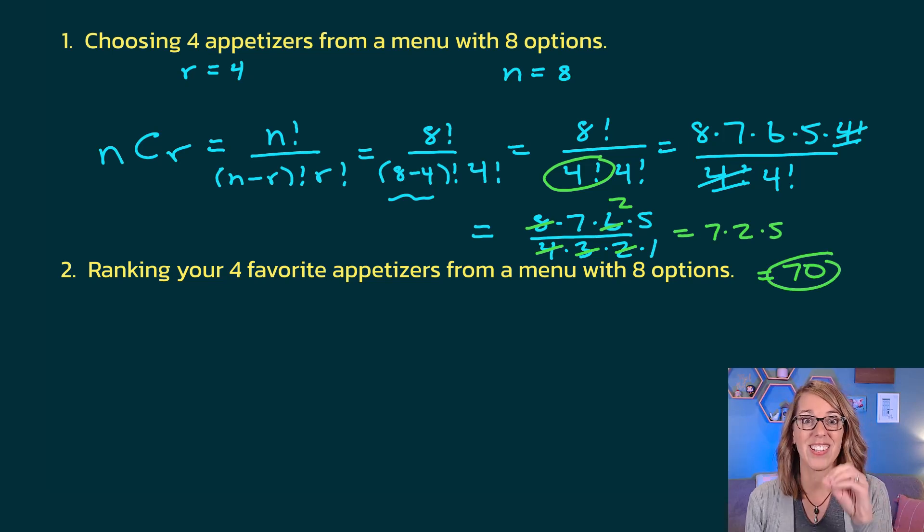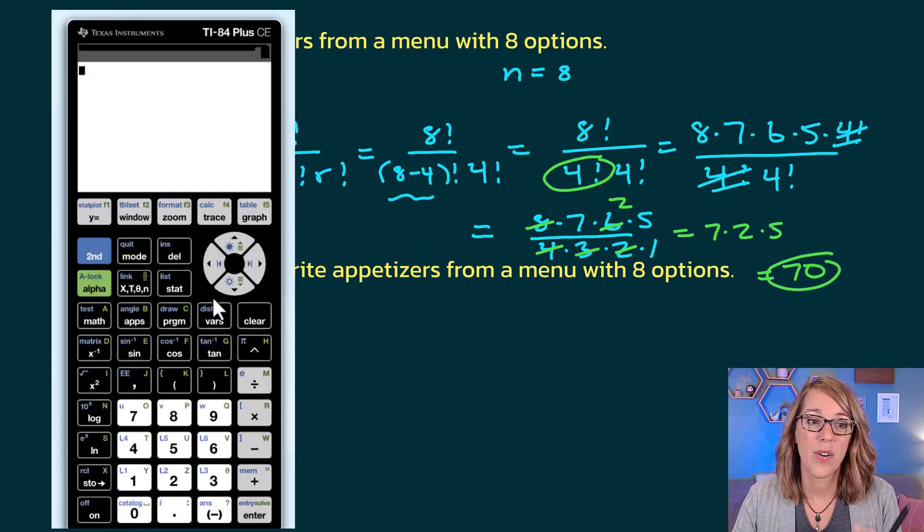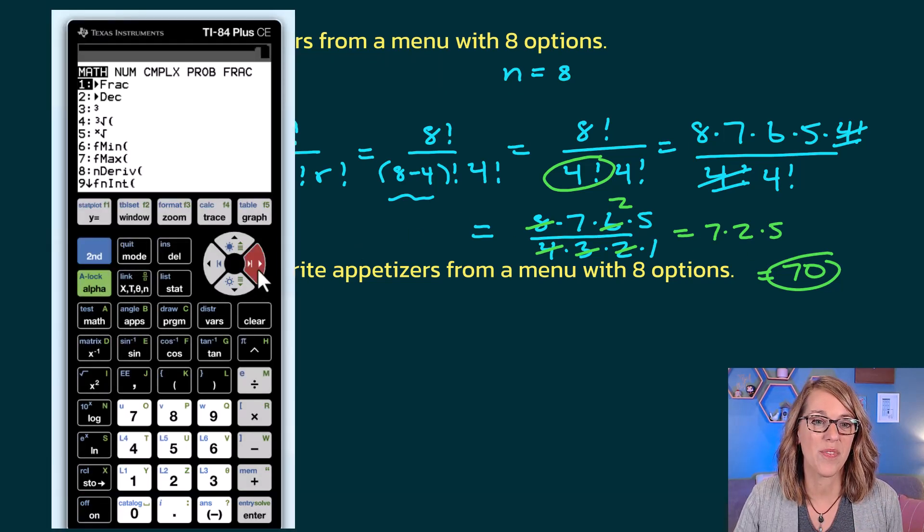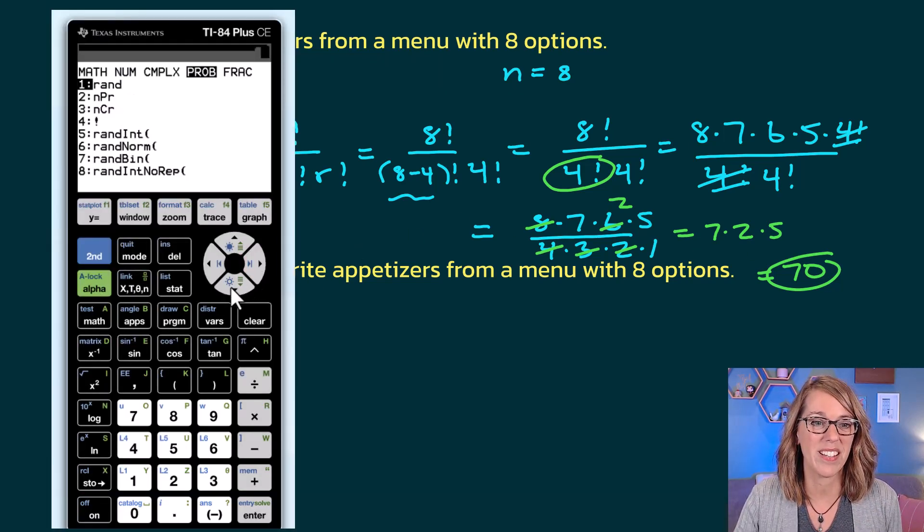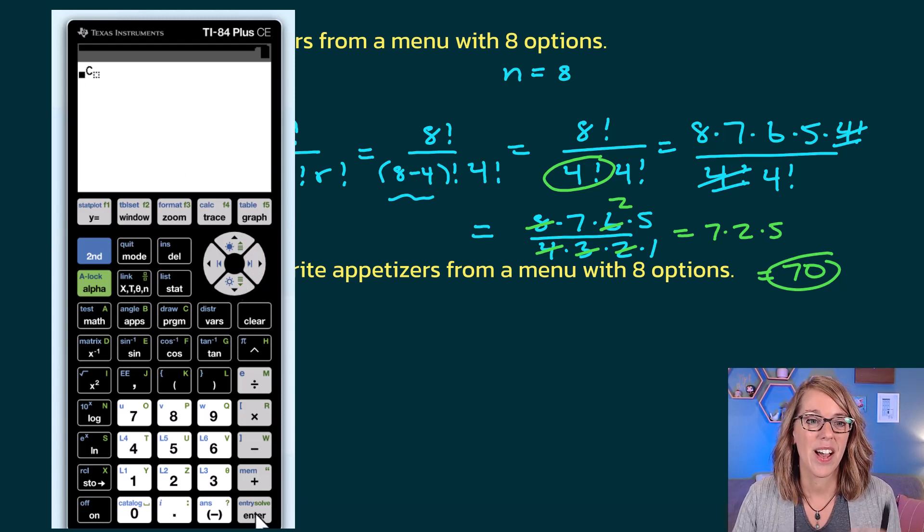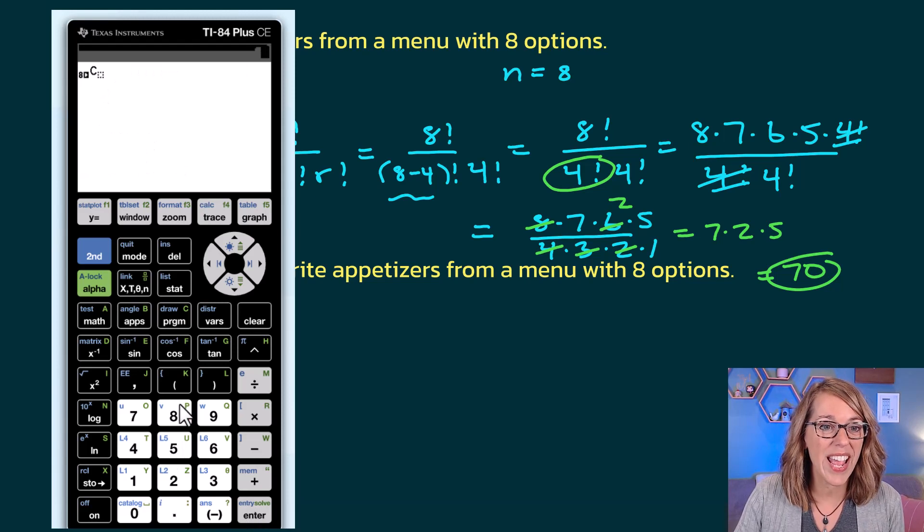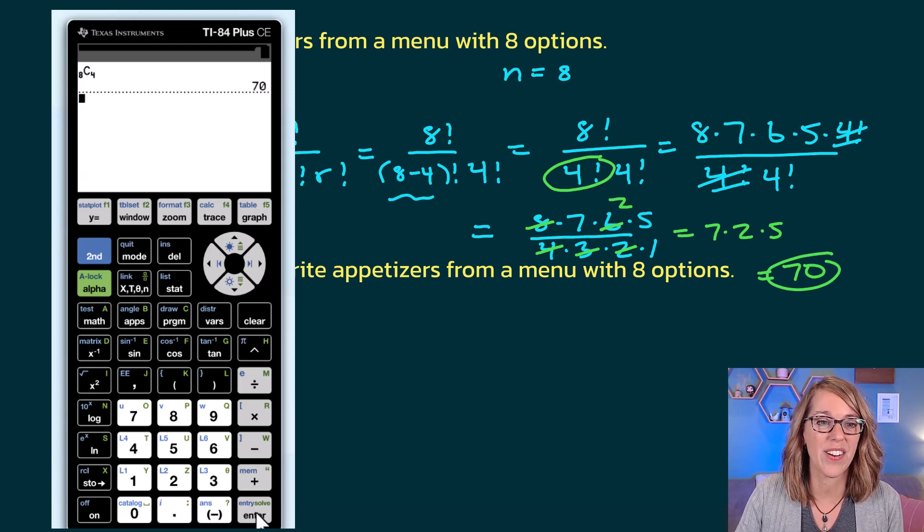Now that's the long way. Let's check and see what our calculator gives us. I want to go into my math menu, and then over to probability. I'm going to choose the combination. Hit enter. N comes first. There were 8 to choose from, and I am choosing 4 of them all together, and thank goodness I got that 70. Calculator is so much easier.